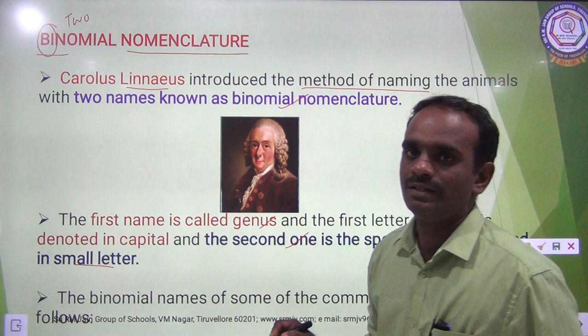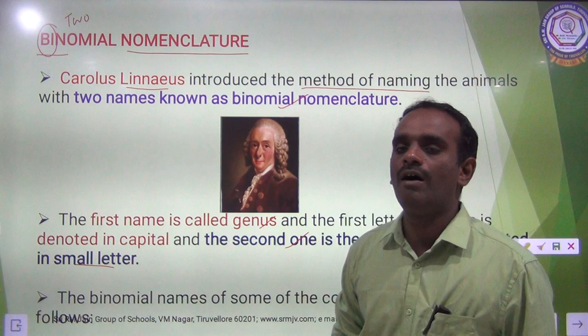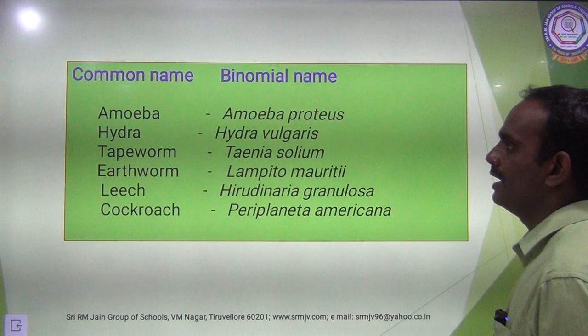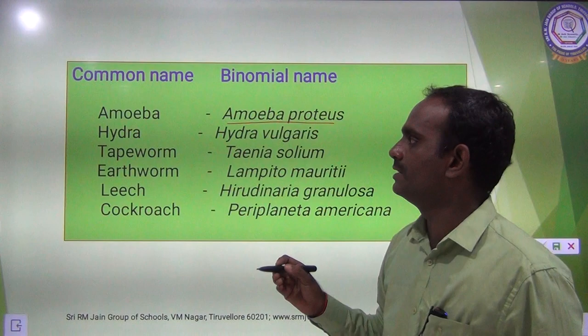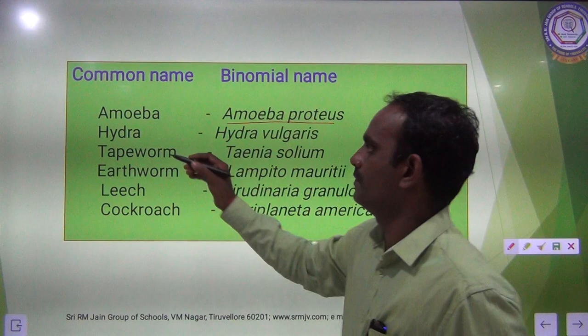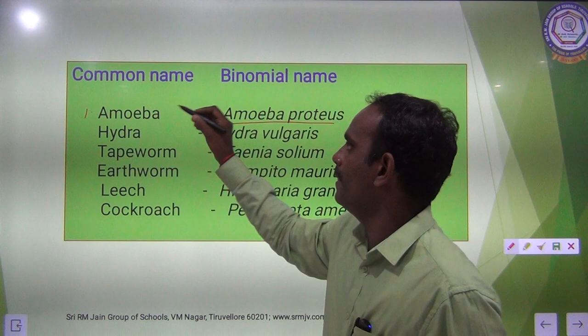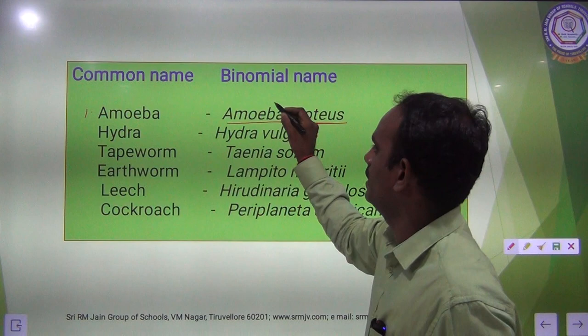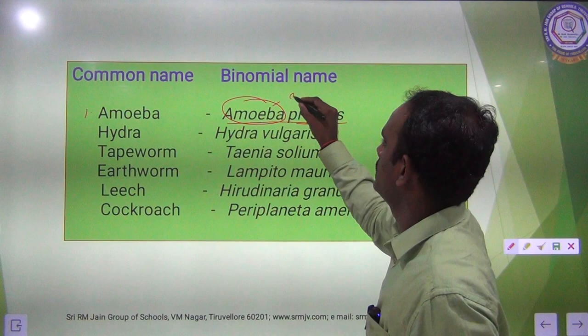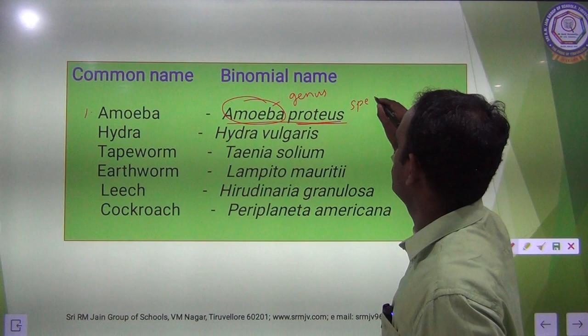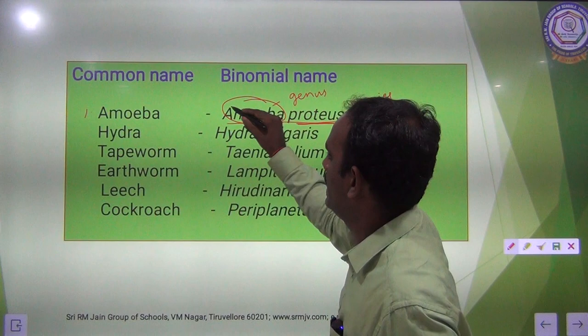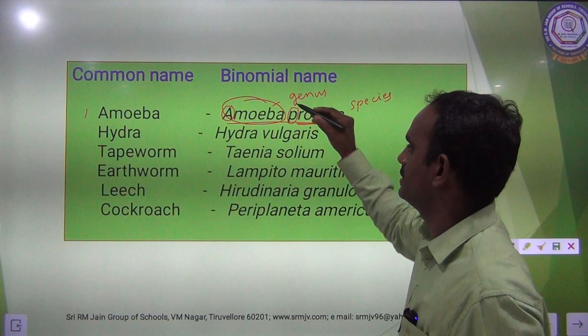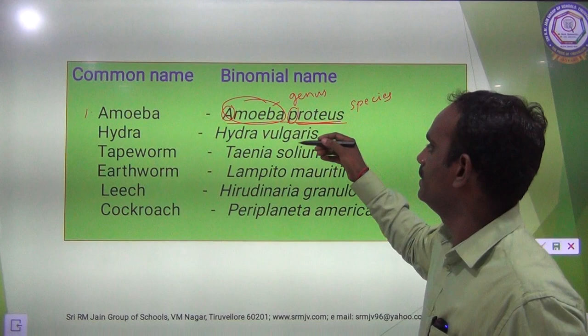The binomial names of some common animals are as follows. The first one is Amoeba — common name Amoeba, binomial name Amoeba proteus. In that, the first name is Amoeba, which is the Genus starting with a capital letter, while the Species — the second name — starts with a small letter. Like that, for all binomial names, the Genus should be capital and Species should be in small.